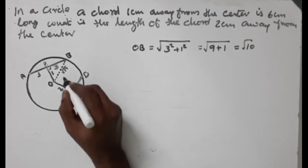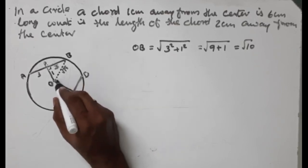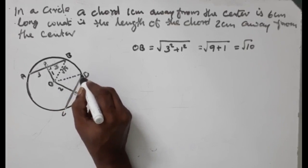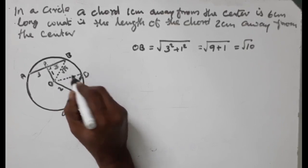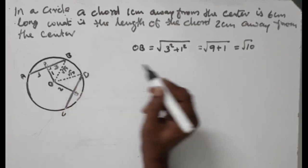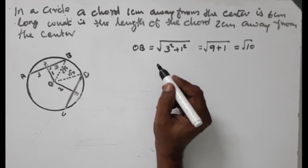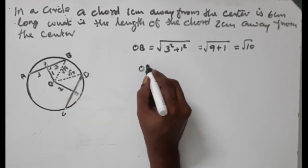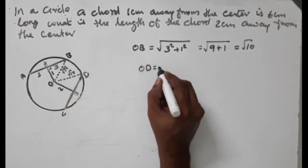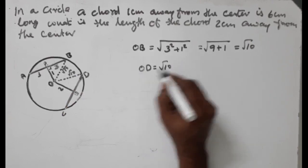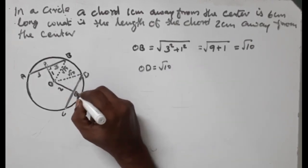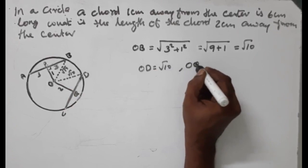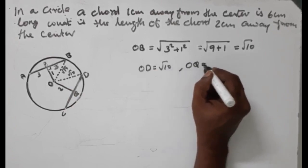So if we have OD, the OD distance is the root of 10, which is the radius.